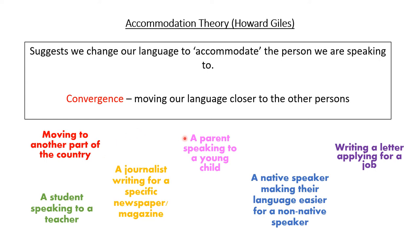Here we have a parent speaking to a young child, so we might expect convergence through easier words or, if it's a really young child, perhaps speaking slower — those doing A-level English language who study child language development might know this as child-directed speech. In blue we have a native speaker making their language easier for a non-native speaker, slowing down and using simpler language. Finally, when writing a letter applying for a job you would likely write more formally than usual, purposely using words to make yourself sound more intelligent.